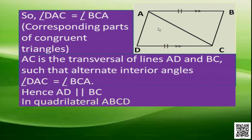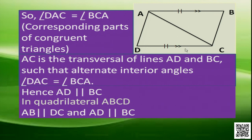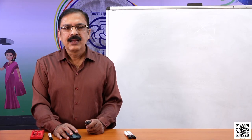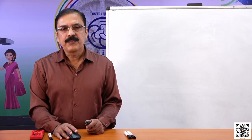In quadrilateral ABCD, we have AB is parallel to CD as given, and now we proved AD is parallel to BC. As the opposite sides of a quadrilateral are parallel, this quadrilateral is a parallelogram. So we can say ABCD is a parallelogram.